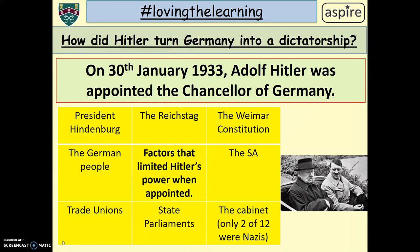Hitler was appointed Chancellor of Germany on the 30th January 1933 by President Hindenburg, who you can see in the picture. But when Hitler was actually appointed Chancellor, he wasn't really that powerful. Yes, he was the chancellor, he was the leader, but there were lots of things that restricted his power. For example, only two of the twelve members in the German cabinet were actually Nazis, and the president was more powerful than Hitler at that time.